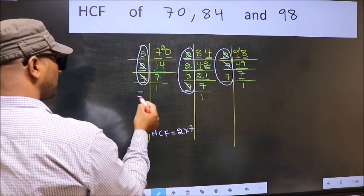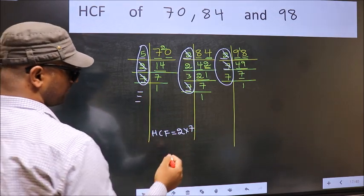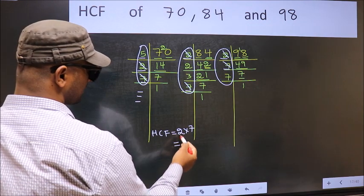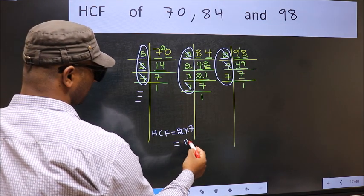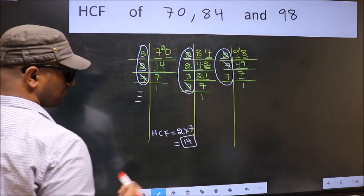No more numbers have been left out. Therefore, our HCF is 2 into 7, 14. 14 is our HCF.